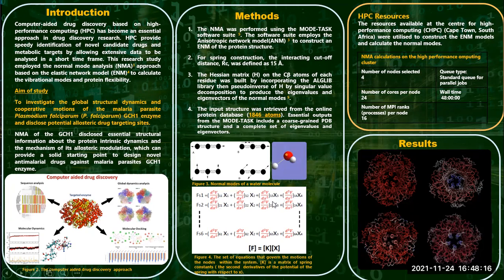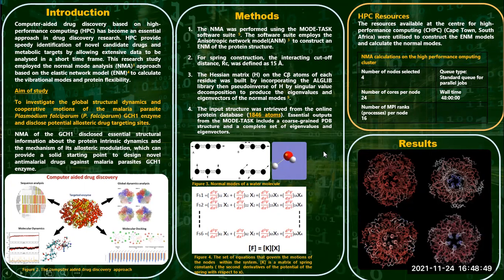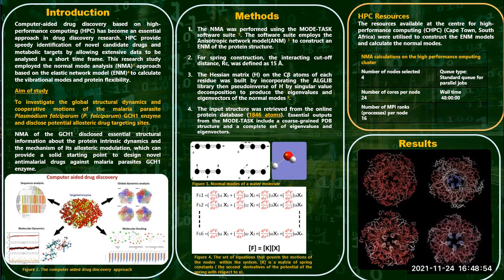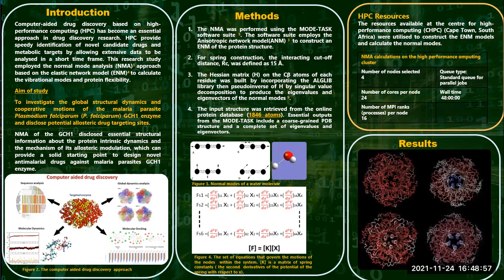The matrix produced from the calculations — the 3N matrix, also called the Hessian matrix — is then decomposed into eigenvalues and eigenvectors. The 3N matrix is a total of 5,538 sets of equations, and therefore we needed the HPC resources to handle such heavy calculations. The resources used are highlighted in the yellow box, and we were able to obtain key motions related to this enzyme, including a breathing motion and a twisting motion involving the narrowing of its central cavity.